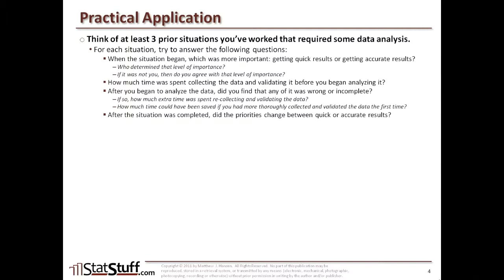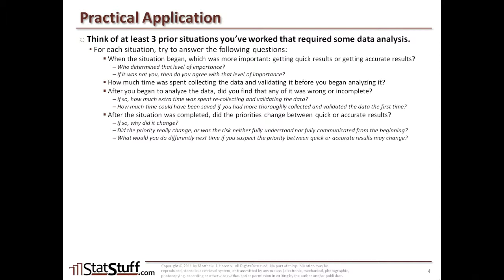After the situation was complete, did the priorities change between quick and accurate results? If so, why do you think it changed? Did the priority really change, or was the risk neither fully understood nor fully communicated from the very beginning? And what would you do differently next time if you suspect the priority between quick and accurate results may change? Well, that wraps up this lesson. Check out statstuff.com for many more resources that can help you achieve powerful results. I'm Matt Hanson, thanks for watching.